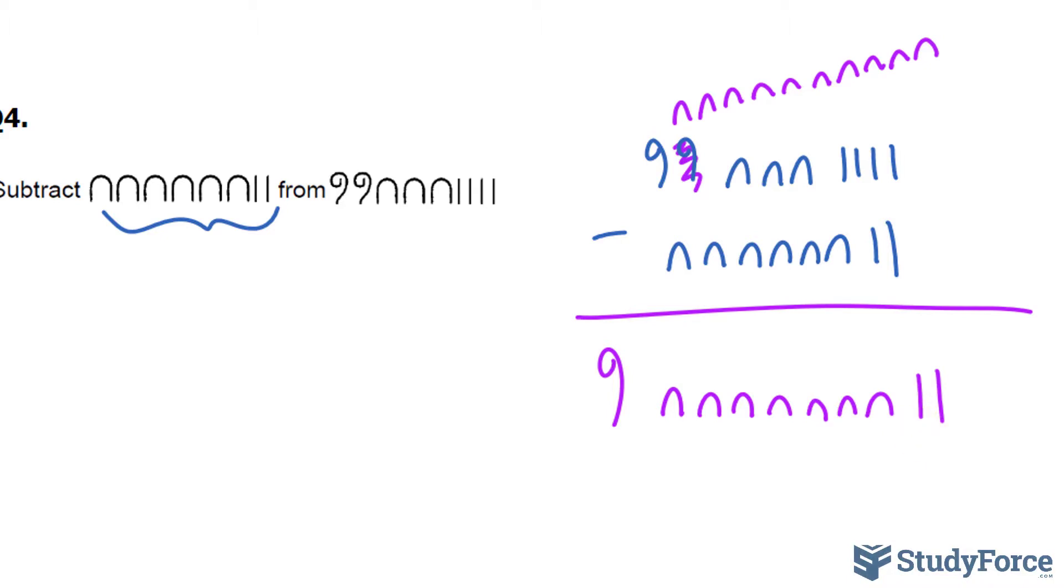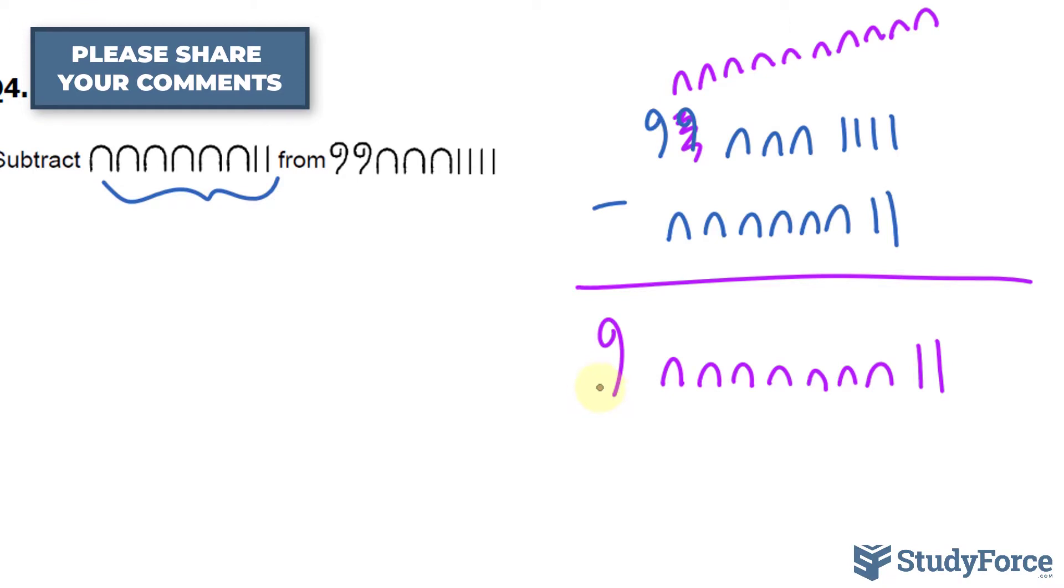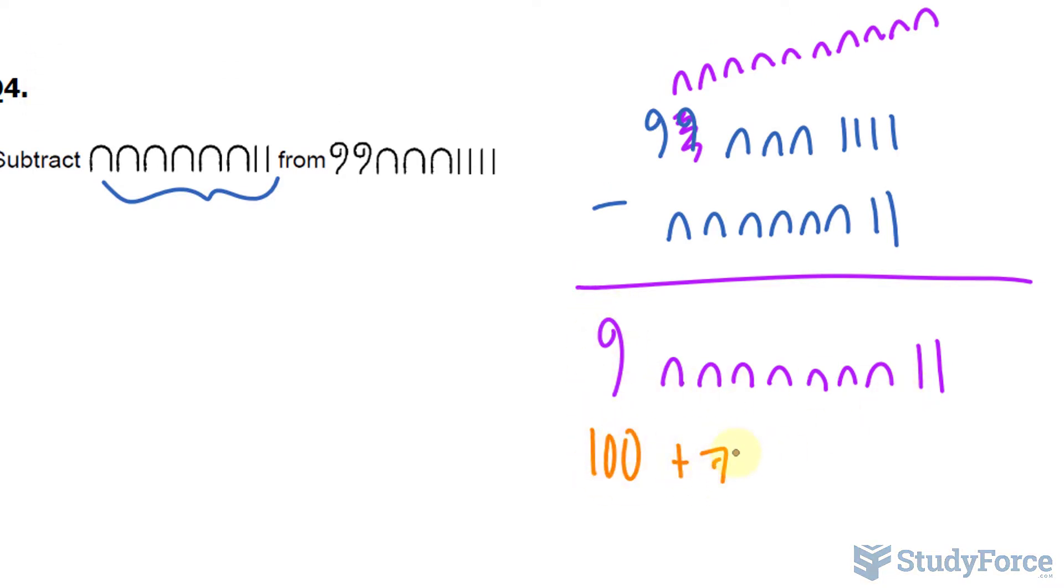And 4 strokes minus 2 strokes makes 2 strokes. If we want to change this into Indo-Arabic notation, we have here 100, 7 of those, so 7 times 10 is 70, and 2 strokes, that's 172.